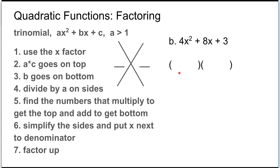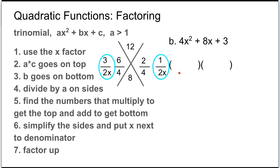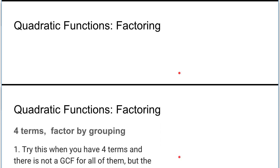Try 4x² + 8x + 3. A times C is 4 × 3 = 12, put 8 at the bottom, put 4s below. Find two numbers that multiply to 12 and add to 8: that's 6 and 2. Now reduce the fractions — 6/4 reduces to 3/2 and 2/4 reduces to 1/2. Writing them going up gives (2x + 3)(2x + 1). Order of the factors doesn't matter.